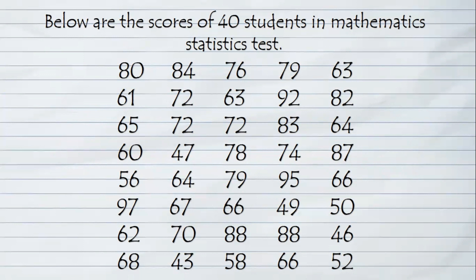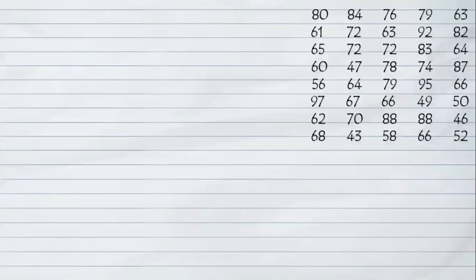Our aim is to create this given ungrouped data to a group data using frequency distribution table. To start with, we will first identify what is the highest and what is the lowest value. Based on the observation, the highest is 97 and the lowest is 43.